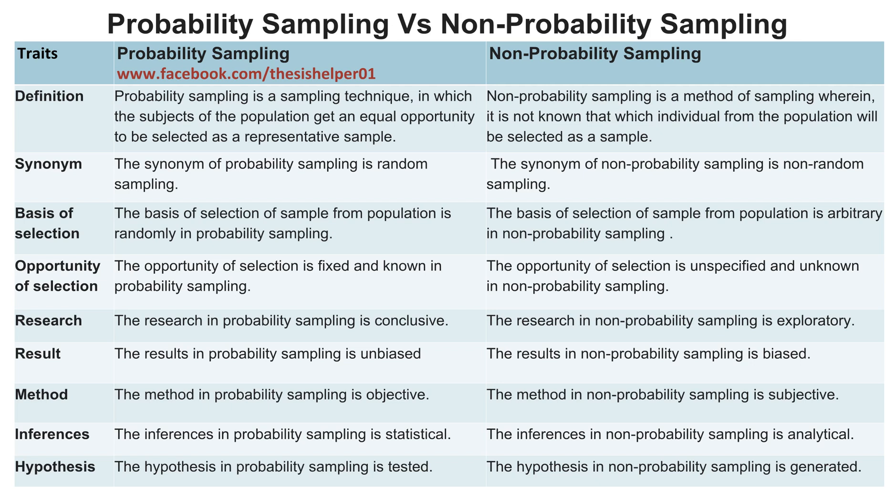The results in probability sampling are unbiased, whereas the results in non-probability sampling are biased.